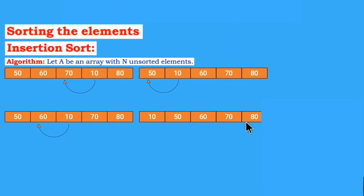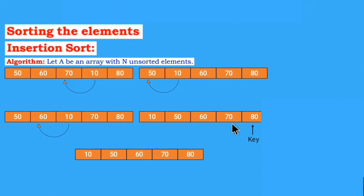Now the key element is 80. Next, 80 will be compared with each of the previous elements. Here 80 is greater than 70, so no interchange takes place. Then 80 is compared with 60 — no interchange. Compared with 50 — no interchange. Compared with 10 — no interchange. Hence the array is now in sorted order.